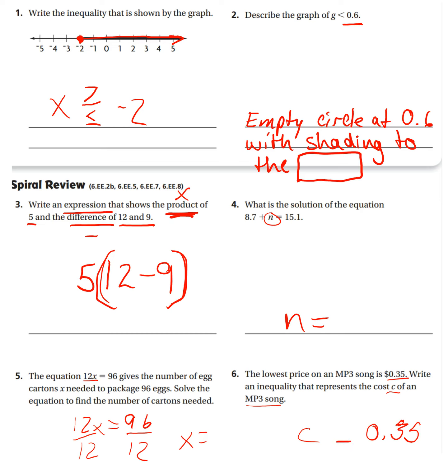I know it can be equal to 35, so I know there's going to be a line underneath. And this says that 35 cents is the lowest price, so the cost is going to be greater than or equal to this low price of 35 cents.